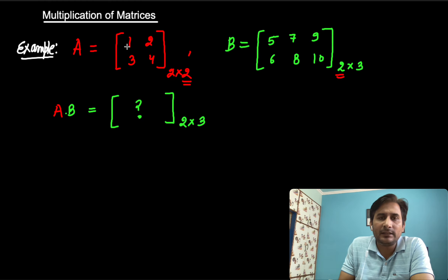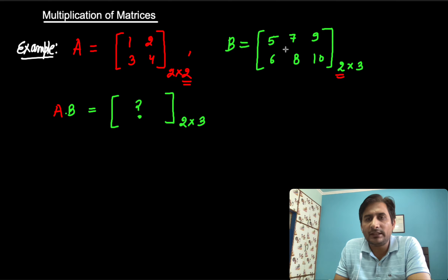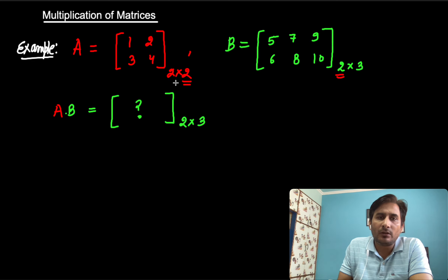If matrix A is 1, 2, 3, 4, the order of this matrix is 2×2. And matrix B is 5, 6, 7, 8, 9, 10 and the order of this matrix is 2×3. So we need to find A×B, the multiplication of A and B.